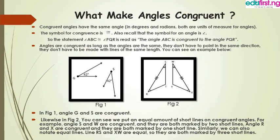What makes angles congruent? So here I may ask: what are congruent angles? Two angles are congruent as long as the angles are the same. Congruent angles have the same angle measure.